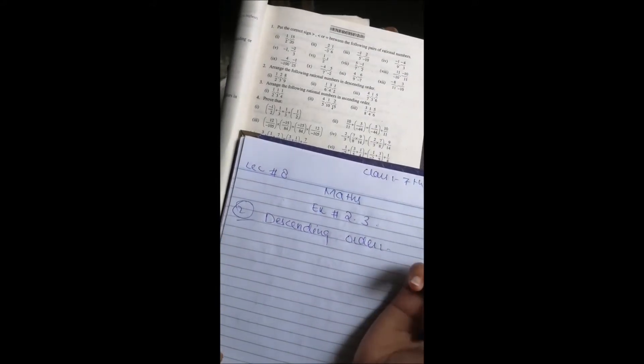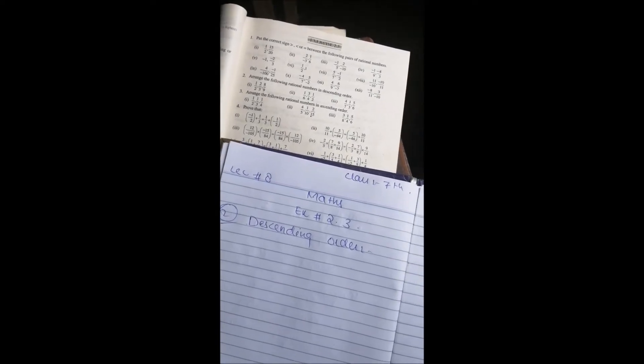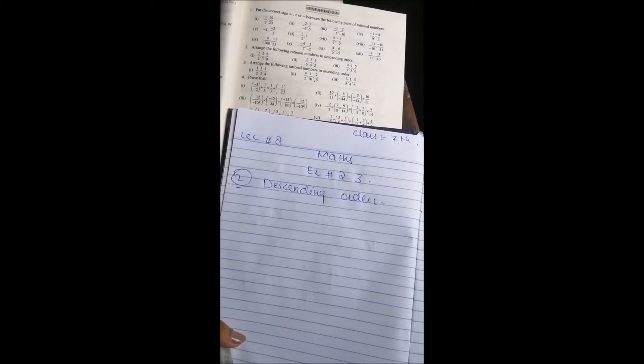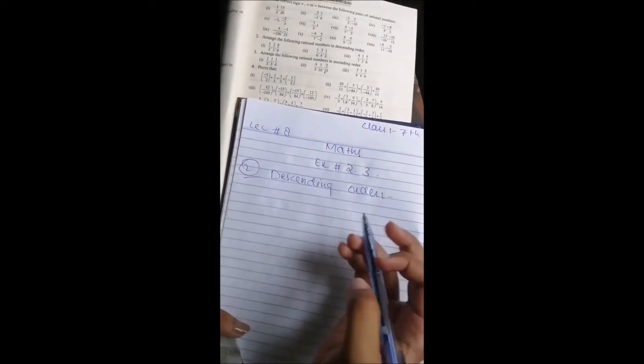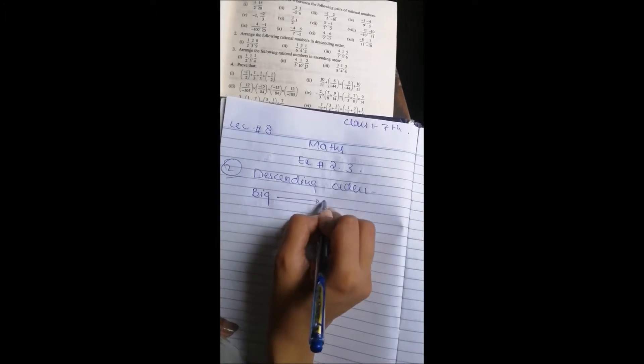In question number 2, you have to arrange the following rational numbers in descending order. You should know what to do in descending order. Fractions are given below. You have to write the biggest fraction first, big to small numbers.